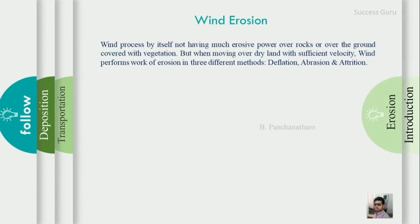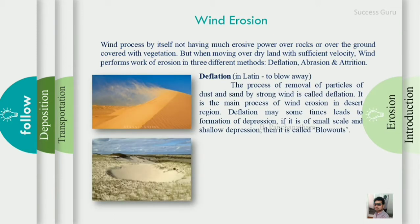First, the erosion process. The main erosion processes are deflation, abrasion, and attrition. First is deflation. Deflation comes from the Latin meaning 'to blow away'. The process of removal of particles of dust and sand by strong wind is called deflation.